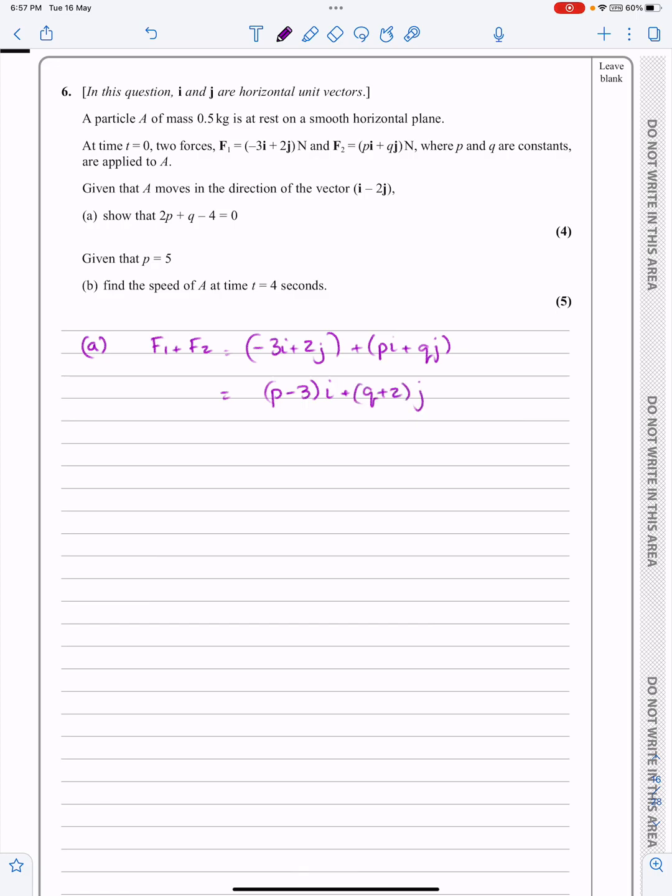Now, they're telling me then, this is quite a usual type of question here. They're telling us it moves in that direction. If it moves in that direction, it's parallel to that direction. So what it means is, the easiest way of doing it is to say the ratio of this to this is going to be the same as the ratio of this to this.